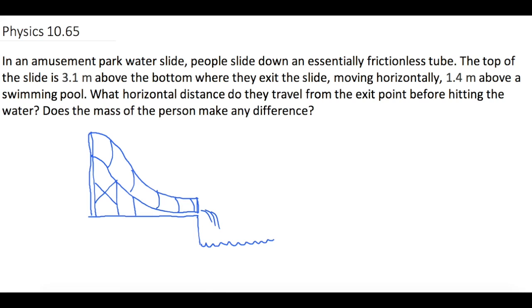In an amusement park water slide, people slide down an essentially frictionless tube. The top of the slide is 3.1 meters above the bottom where they exit the slide, moving horizontally 1.4 meters above a swimming pool. What horizontal distance do they travel from the exit point before hitting the water? Does the mass of the person make any difference?